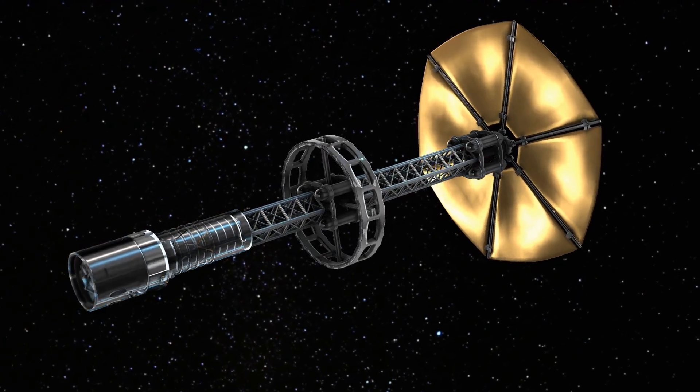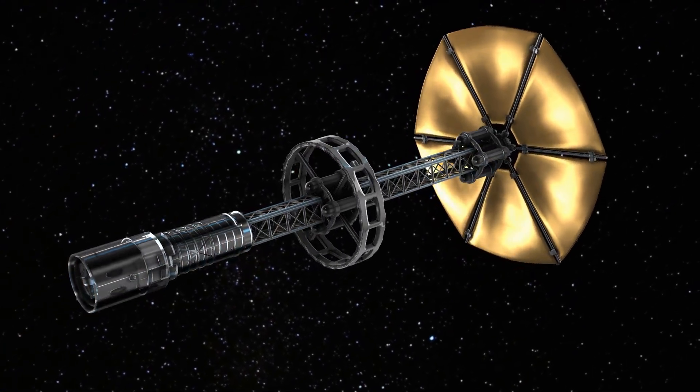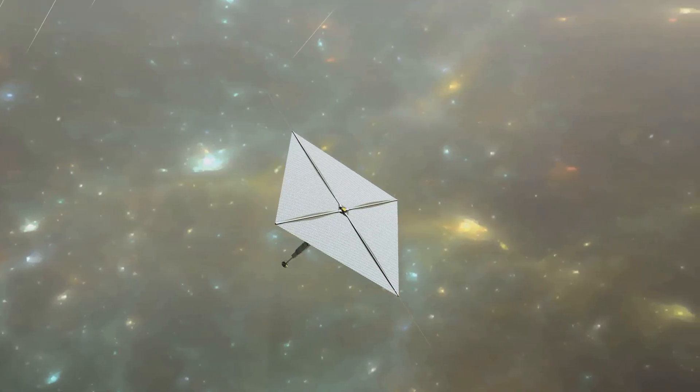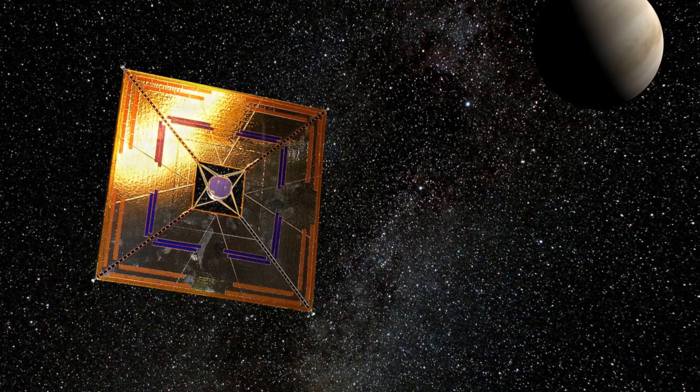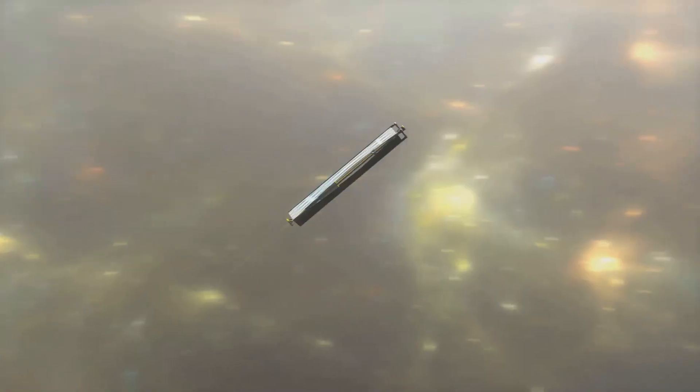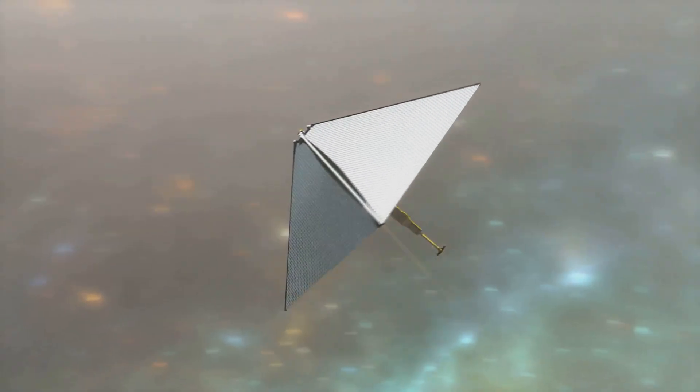Then there's the idea that's actually getting funding right now, laser sails. Picture this, a paperclip-sized probe with a giant reflective sail, pushed by a powerful laser beam from Earth. Breakthrough Starshot wants to do this, and they think they could get to Alpha Centauri in just 20 years, but only for a probe, not humans. Downside, no brakes. It would just fly right past at 20% light speed. Blink and you miss it.